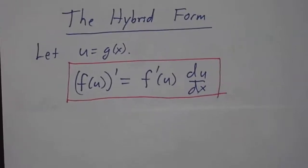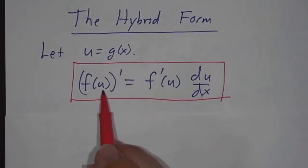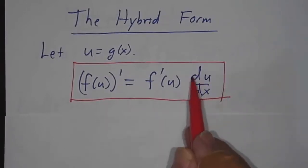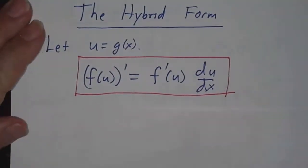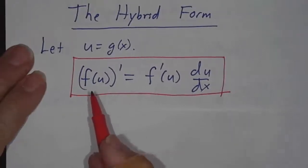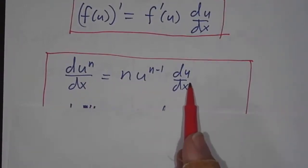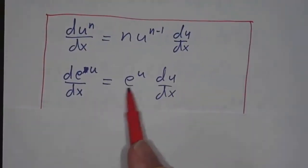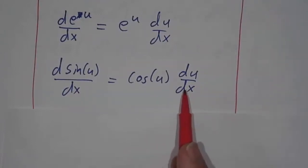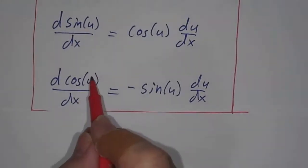There's also the hybrid form. The hybrid form is the same thing, only if we give g of x a name and call it u. So instead of saying f of g of x, we'll say f of u. The derivative of f of u is f prime of u — that's f prime of g of x — times the derivative of u. This is good for extending our table of functions. The derivative of the nth power of anything is n times the n minus first power times the derivative of that anything. The derivative of e to the anything is e to the anything times the derivative of that anything. The derivative of sine of anything is cosine of that anything times the derivative of the anything. The derivative of cosine is negative sine times the derivative of what's inside, meaning the thing in parentheses, u.